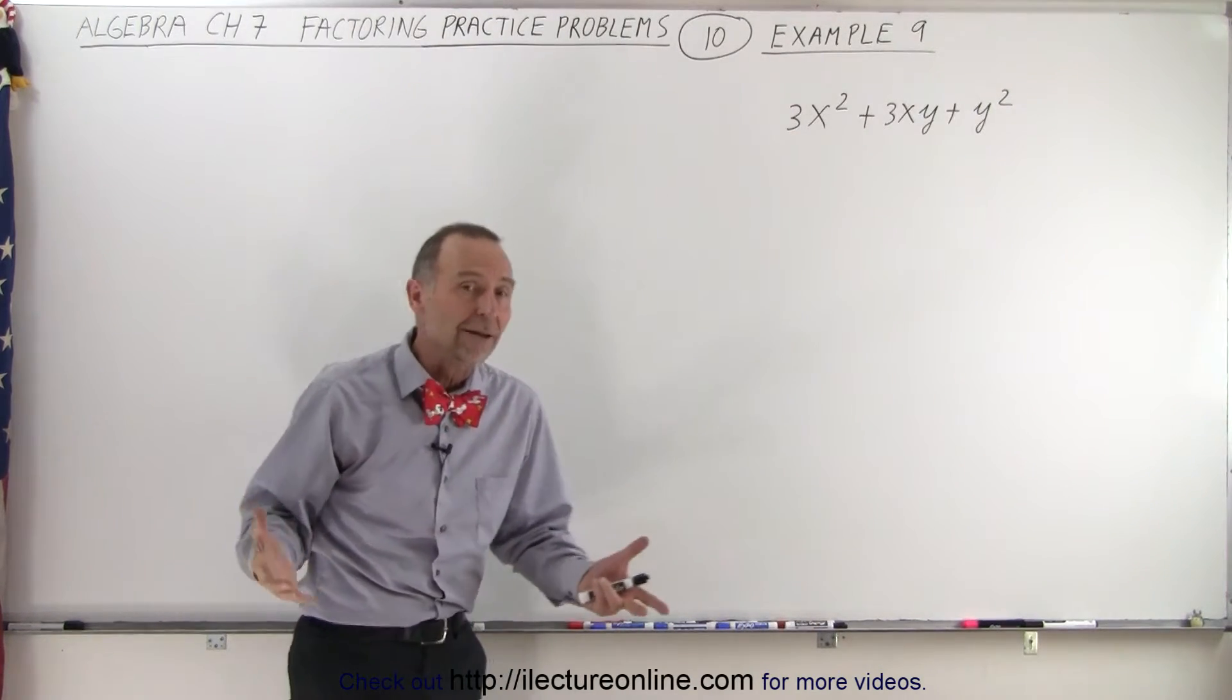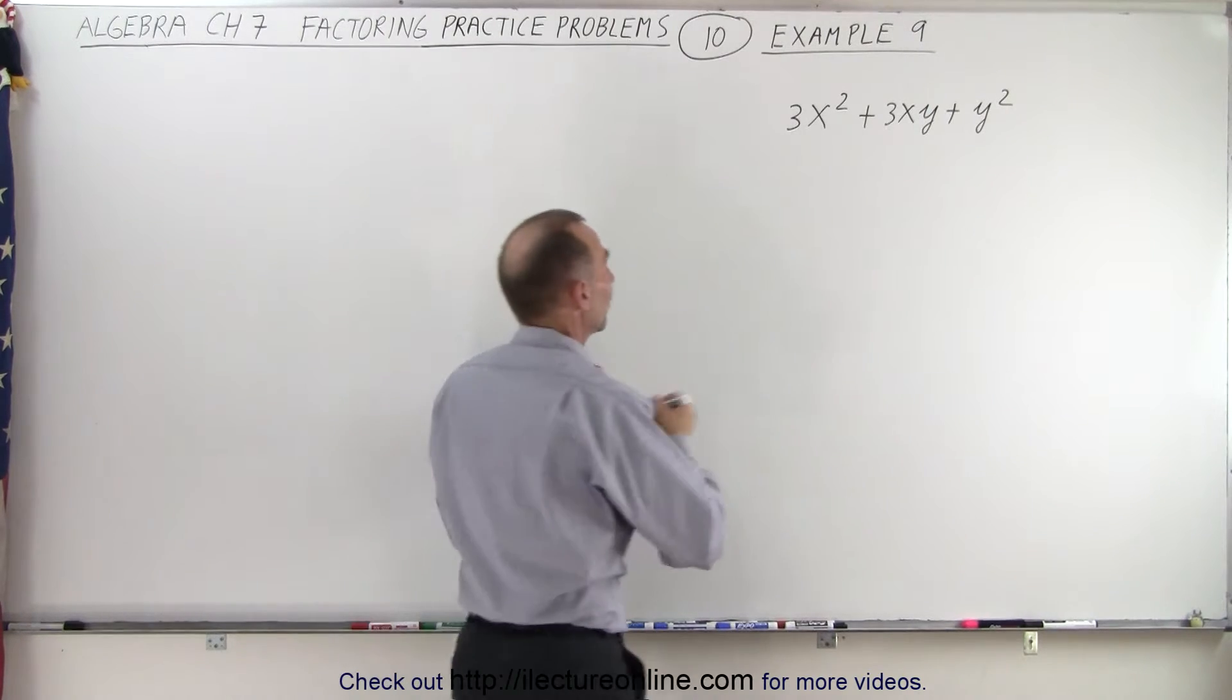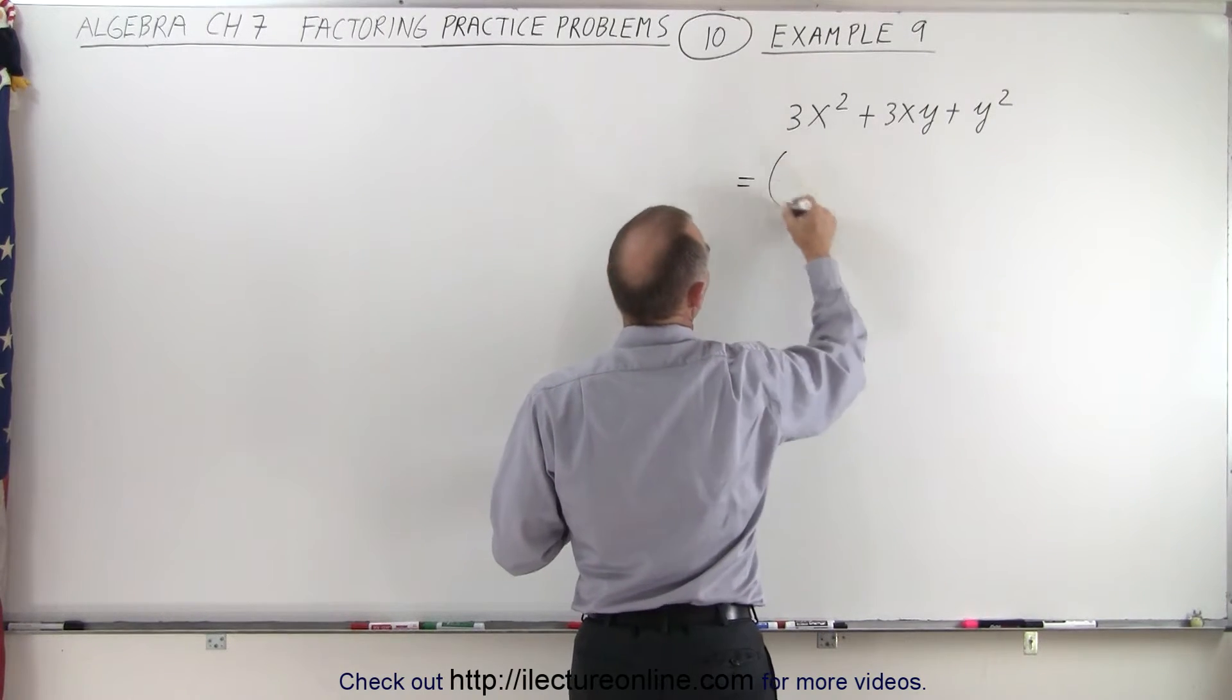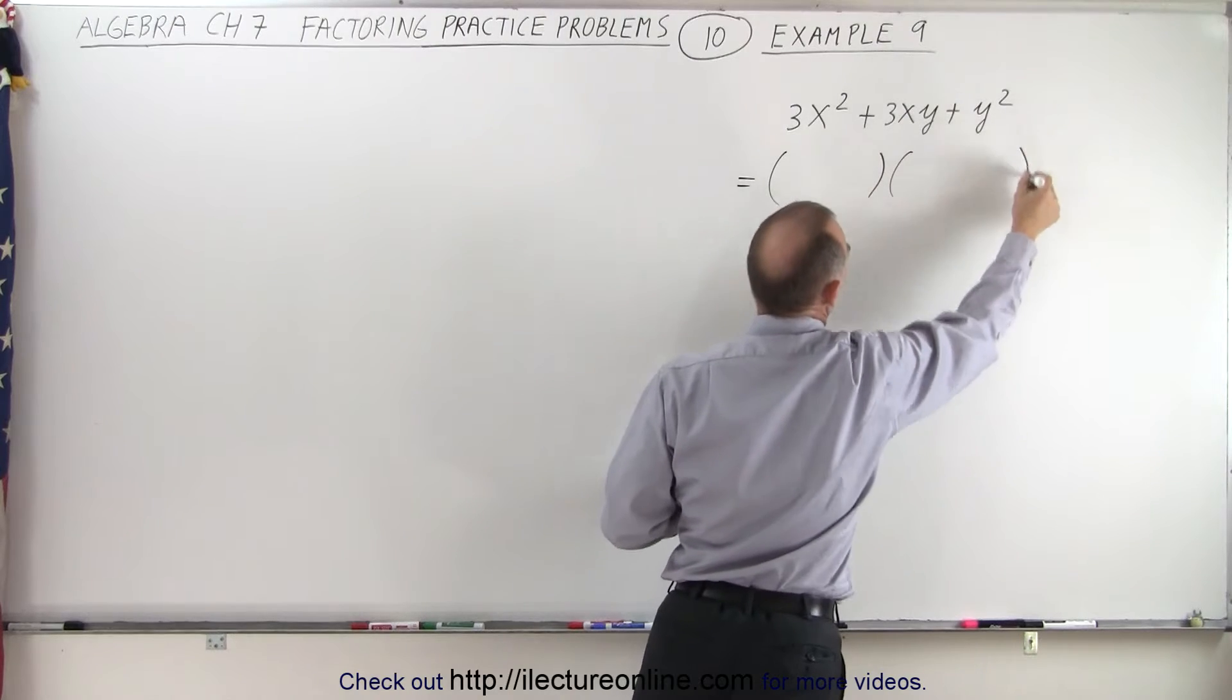We cannot factor out a common factor, which means that this, if it's factorable, will be written as the product of two binomials.